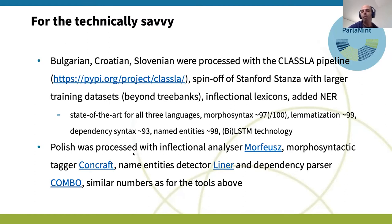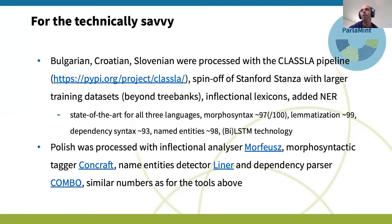For some numbers to give an idea of how good these annotations are: morphosyntax correctly resolves roughly 97 out of 100 words, so about three words are incorrectly annotated per 100. Lemmatization reaches 99%, so almost everything is correct. Dependency syntax is the least accurate annotation layer at roughly 93% accuracy. Named entities are similar to the other layers at 98%.